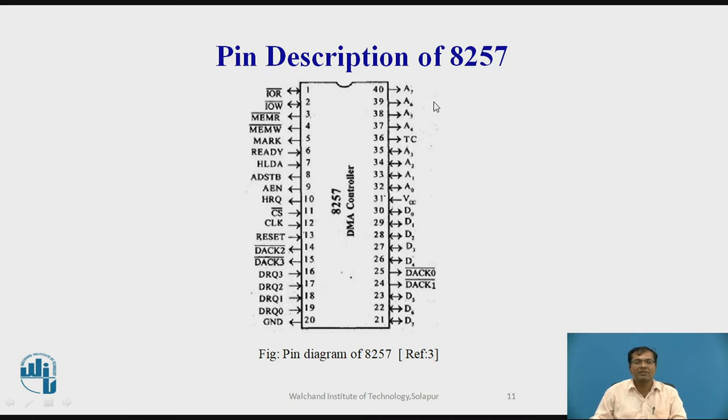This is the pin description of 8257. It is a 40 pin IC. Like IOR bar, IOW bar, memory read, write, mark, ready, hold acknowledgement, ADSTB, AEN, HRQ, CS bar, clock, reset, acknowledgement, DACK2 bar, 3 bar, DRQ 3, VCC, then DRQ2, DRQ1, DRQ0, ground, pin number 31 VCC. Then data lines, acknowledgement line, address line, terminal count, address line.